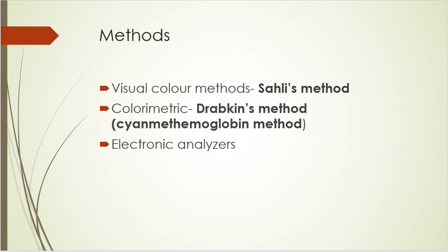When we talk about hemoglobin estimation, there are various methods. One is visual color methods in which direct visualization of color gives us the concentration. For example, Sahli's method. In this video, we'll be explaining Sahli's method, by which we'll be assessing the oxyhemoglobin form of hemoglobin. There is another method which is colorimetric method - for example, Drapkin method, also called cyanmethemoglobin method, in which the hemoglobin in blood is converted into cyanmethemoglobin, the absorbance is measured, and that absorbance is related with the standard value of hemoglobin to get the hemoglobin concentration.